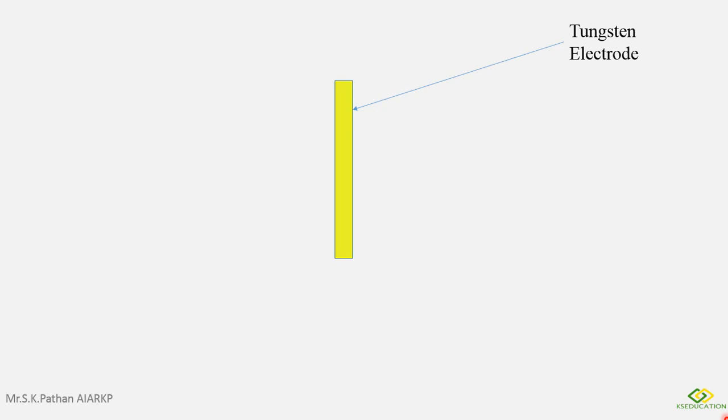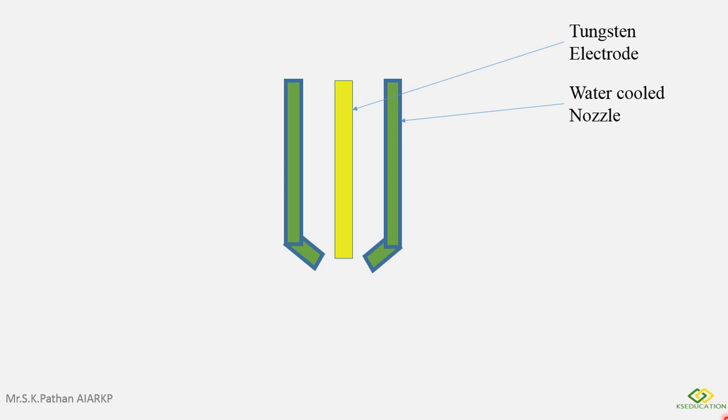So this is a tungsten electrode. When we say tungsten electrode, it means that it is a non-consumable electrode. This is shielded by a water-cooled nozzle.